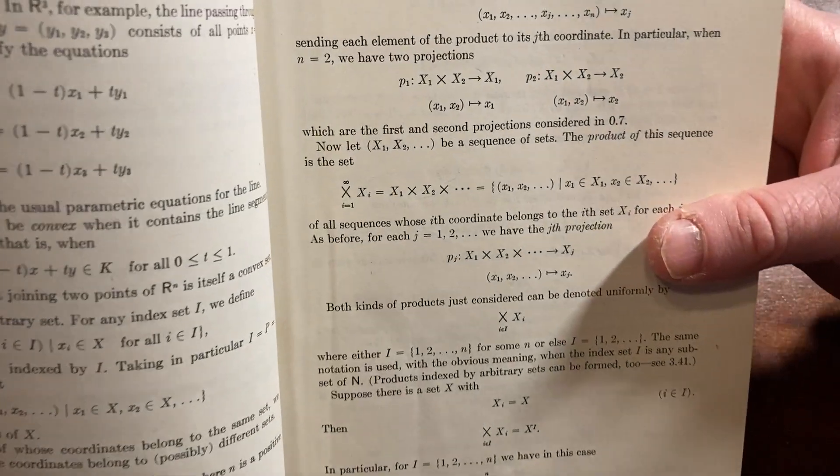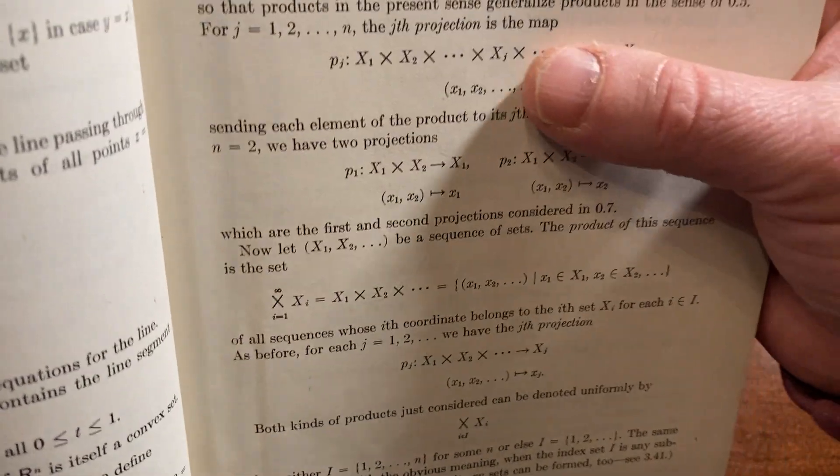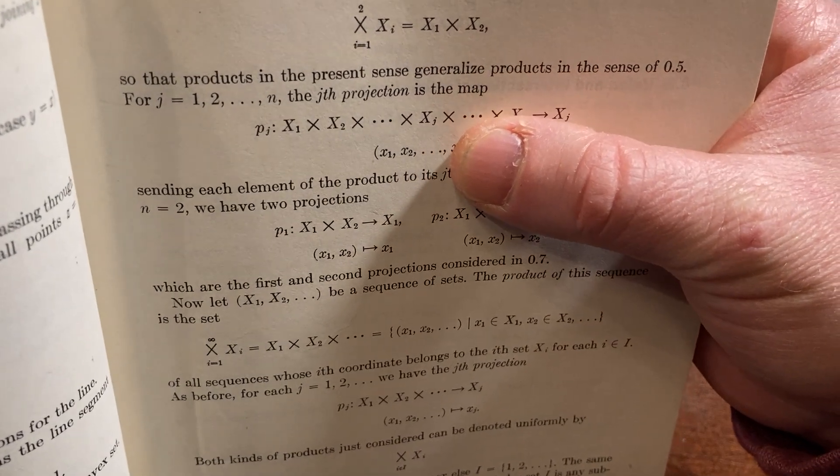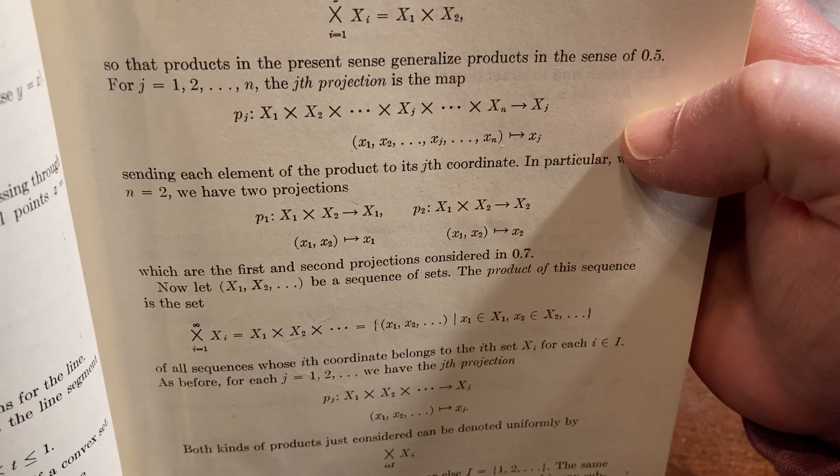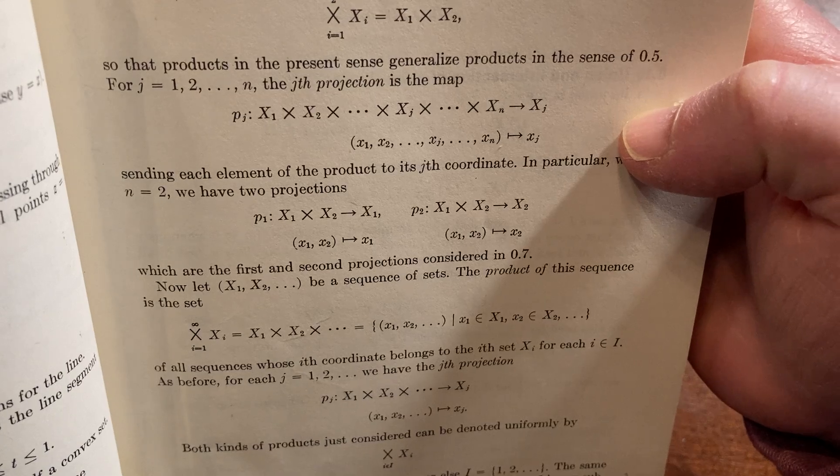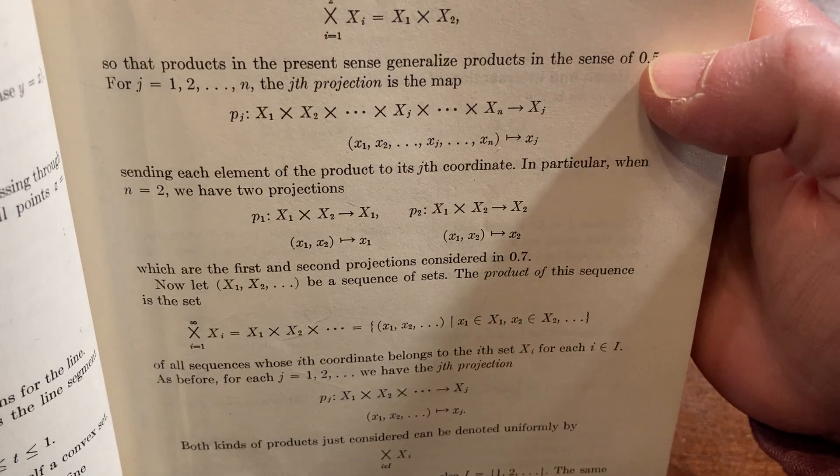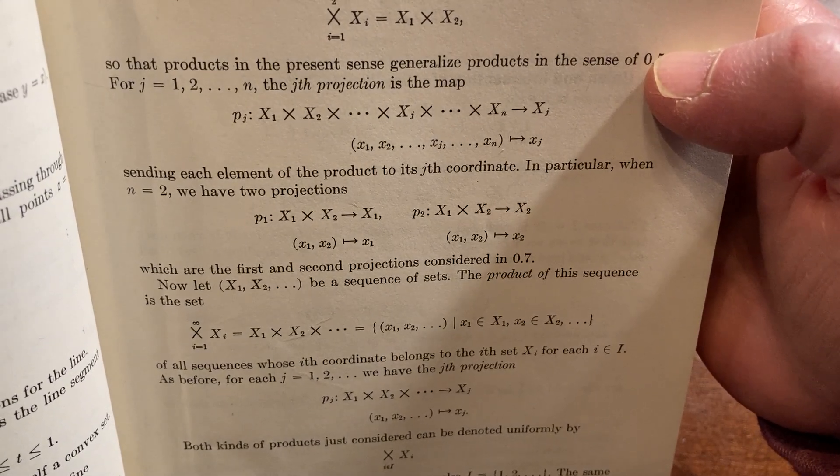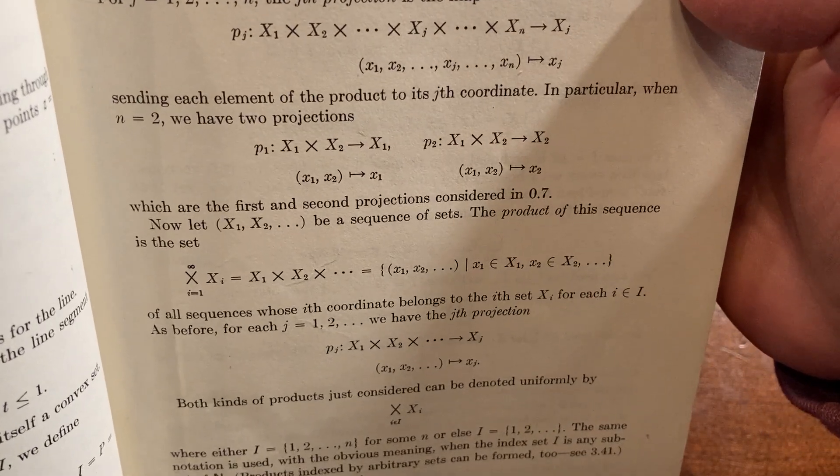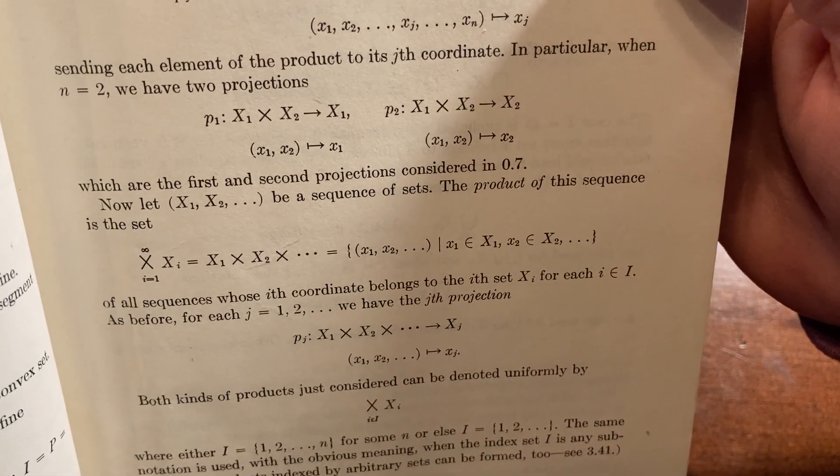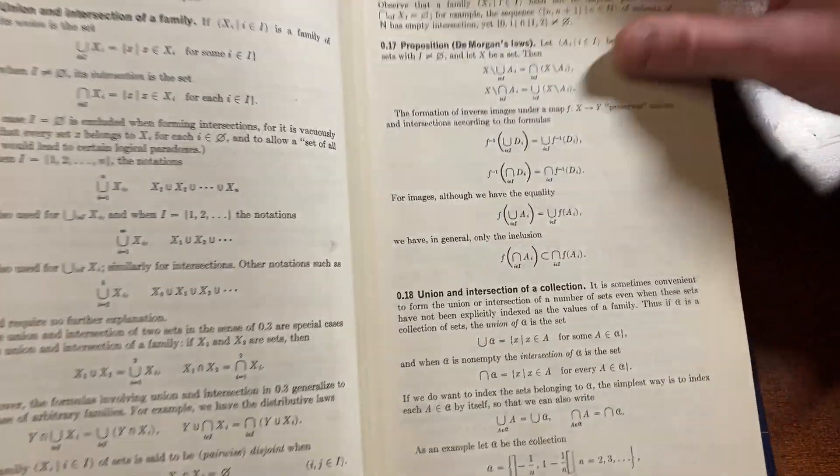Very nice. There they do it again. It's great. Oh, they're defining projections. Projections. So right here, there it says for j 1 through n, the jth projection is the map p sub j, which just basically projects, sending each element of the product to its jth coordinate. In particular, when n equals 2, we have two projections, which are the first and second projections considered in 0.7. De Morgan's proposition.